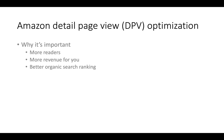Amazon detail page optimization is important because if you can optimize your detail page so more people feel it's meeting expectations and it's convincing them that your book is worth buying, you're likely to get more sales, more revenue, and also, very importantly, more organic search ranking. I'm not going to get into search ranking so much today because I've already covered that in other videos. But all three of these things are good for your publishing business.